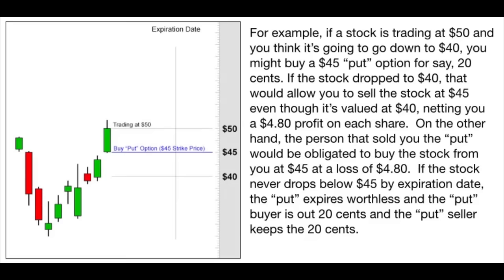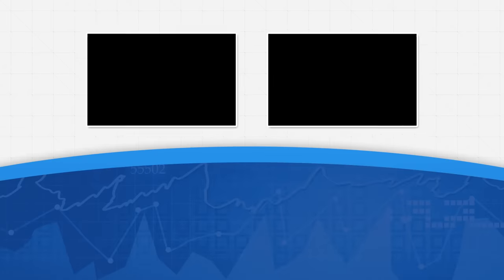For example, if a stock is trading at $50 and you think it's going to go down to $40, you might buy a $45 put option for 20 cents. If the stock dropped to $40, that would allow you to sell the stock at $45 even though it's valued at $40, netting you a $4.80 profit per share. The person who sold you the put would be obligated to buy the stock at $45 at a loss of $4.80. If the stock never drops below $45 by expiration, the put expires worthless — the buyer is out 20 cents and the seller keeps the 20 cents.